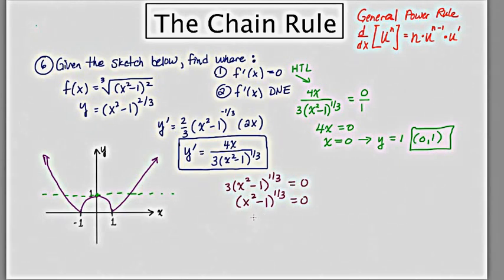I'll cube both sides. I'm going to cube both sides, x squared minus 1 is equal to 0, x squared is equal to 1 and then x equals plus or minus 1.